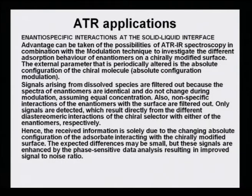Only signals resulting directly from the different diastereomeric interactions of the chiral selector and either of the enantiomers are detected. The received information is solely due to the changing absolute configuration of the adsorbate interacting with the chirally modified surface. Thus, it is possible to do enantiospecific interaction and identify enantiomers — one enantiomer will be identified and the other will not. The expected difference may be small, but signals are enhanced by phase-sensitive data analysis relating to improved signal-to-noise ratio.